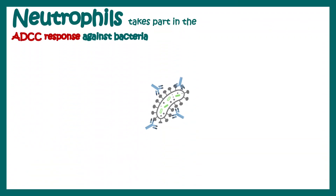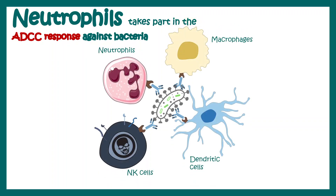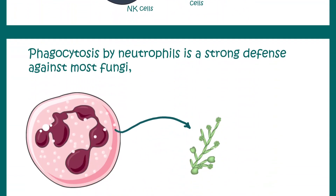Neutrophils also take part in antibody-dependent cellular cytotoxicity (ADCC). In short, our body produces antibodies against invading pathogens. Neutrophils, along with other cells, have receptors against the Fc region of the antibody. So ultimately they can bind to these antibodies and engulf the pathogen, thereby eliminating them.